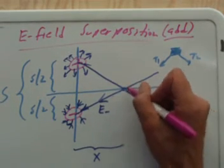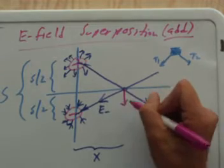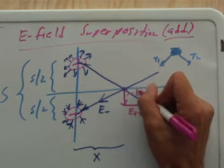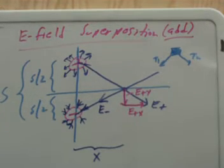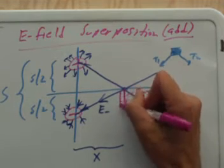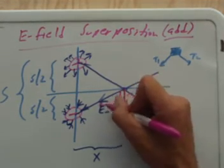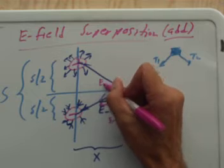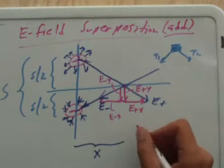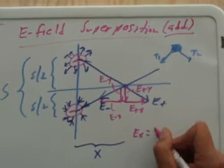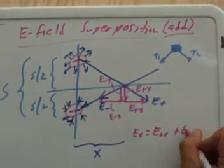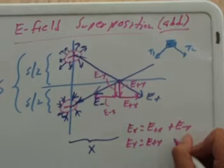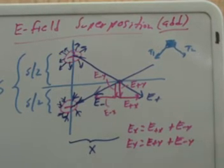The problem is really no different than one where you have a box with a kid pulling on it with tension T1 in one direction and another kid pulling with tension T2 in another direction — what is the net force? So we'll identify vector components and add them up. Due to E-plus, I have a downward component E-plus-Y and a horizontal component E-plus-X. Similarly for E-minus, I have E-minus-X and E-minus-Y.